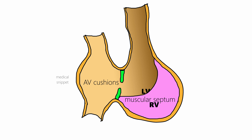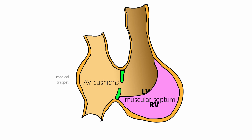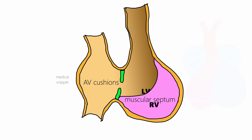On the external surface of the heart, the site of formation of the interventricular septum corresponds to the bulboventricular sulcus. The upper margin of the muscular septum is free, and the gap above it is called the interventricular foramen. The interventricular foramen allows communication between the two ventricles.